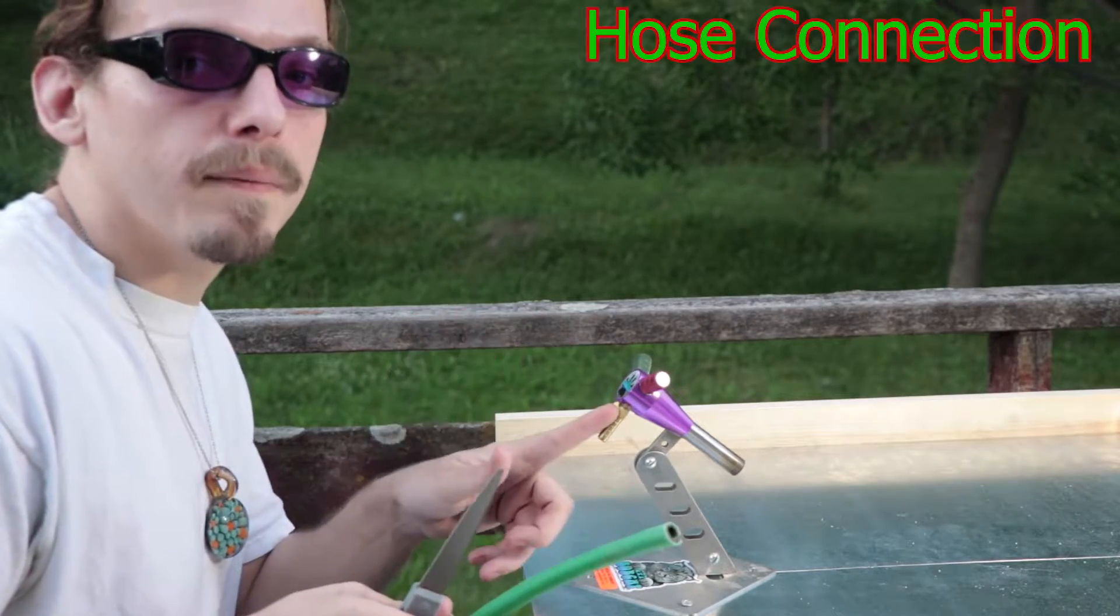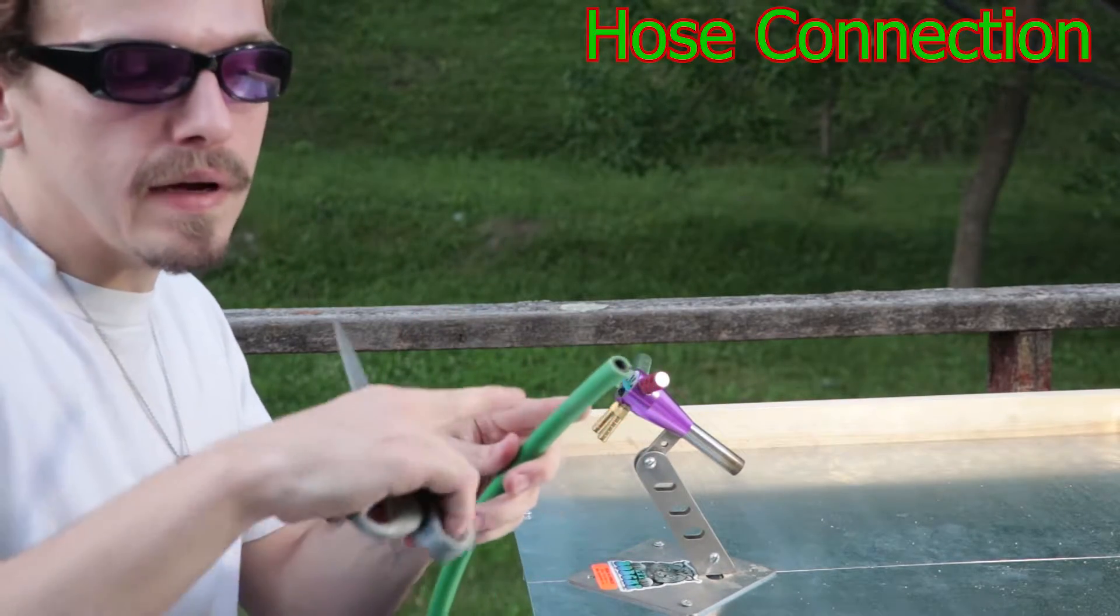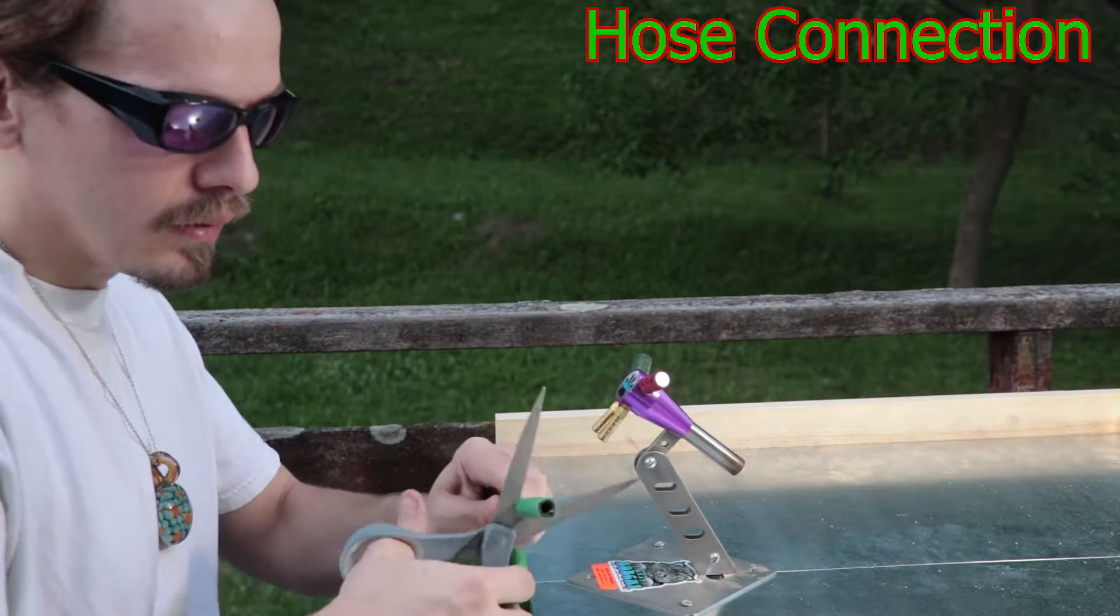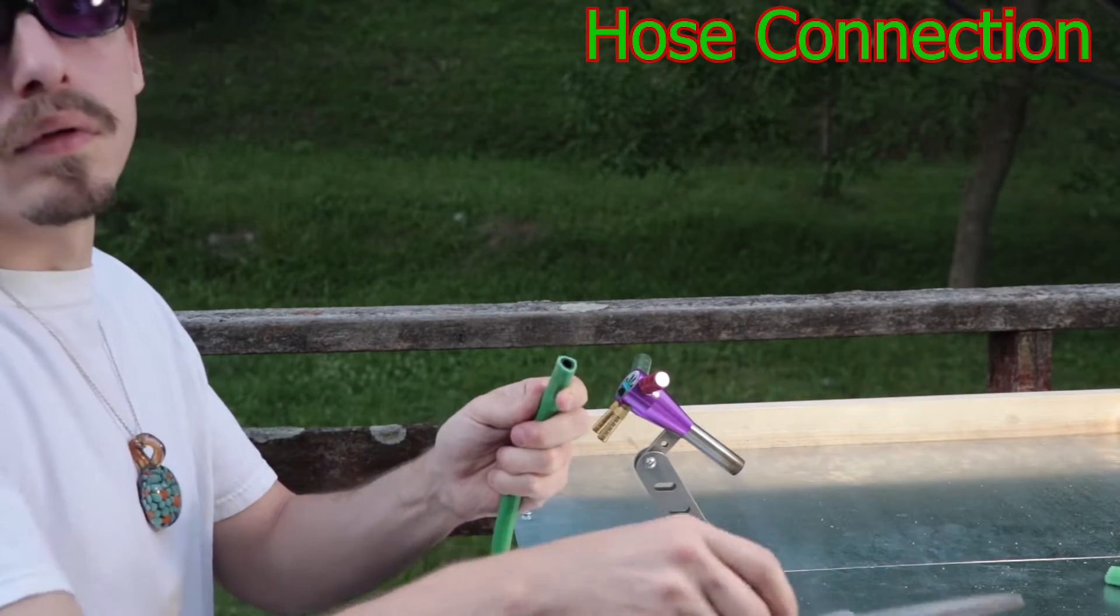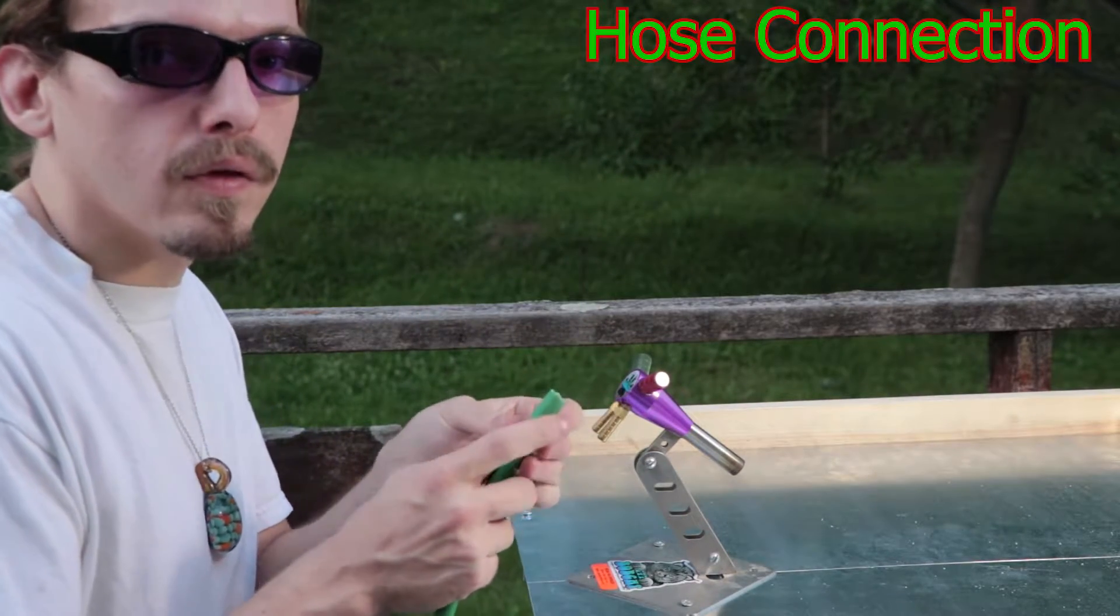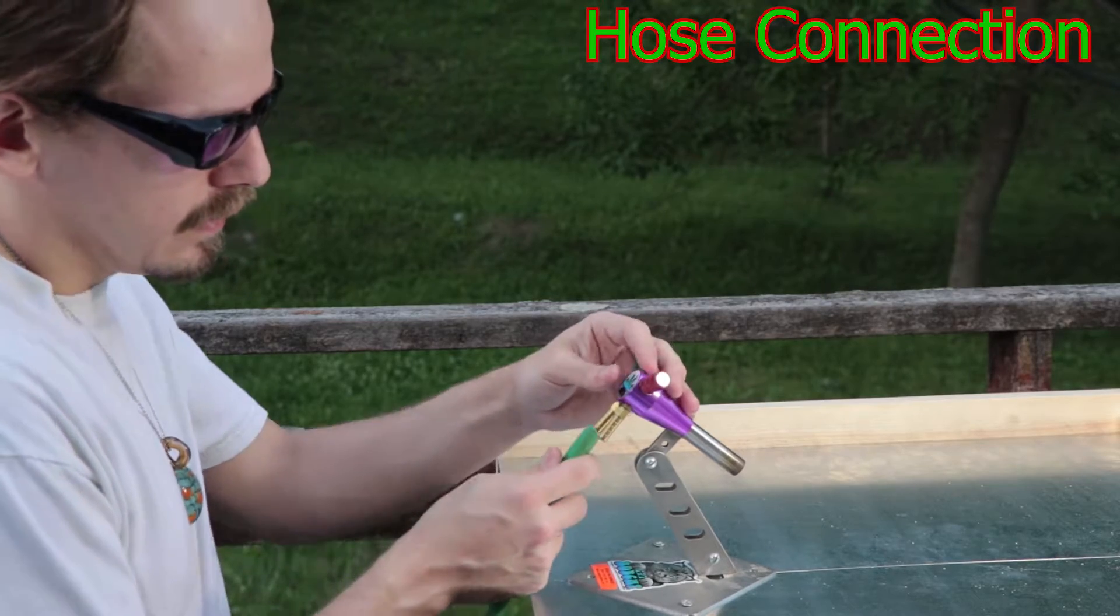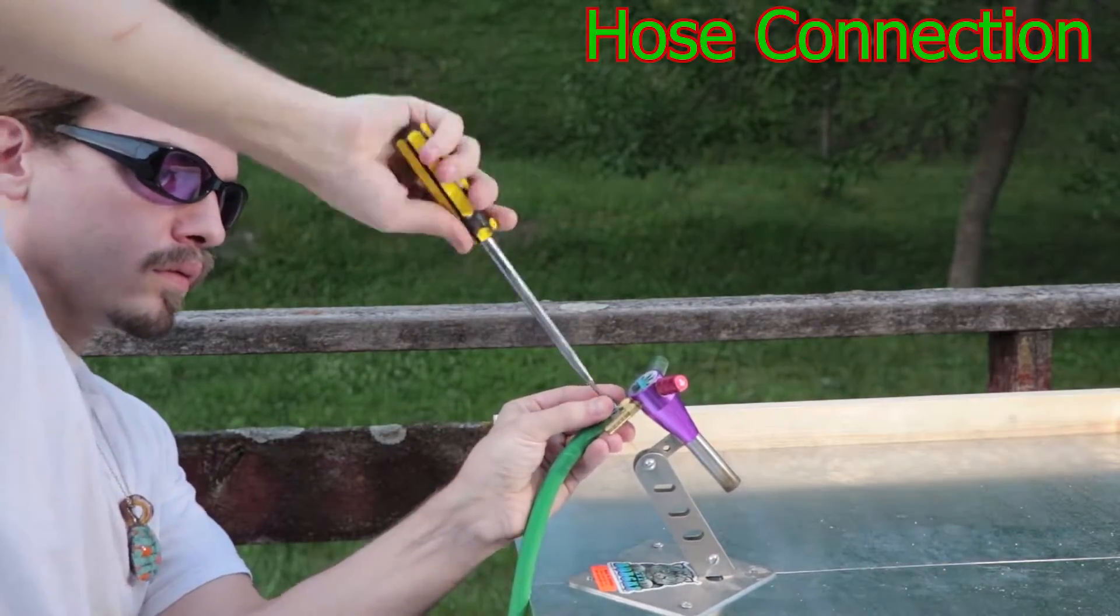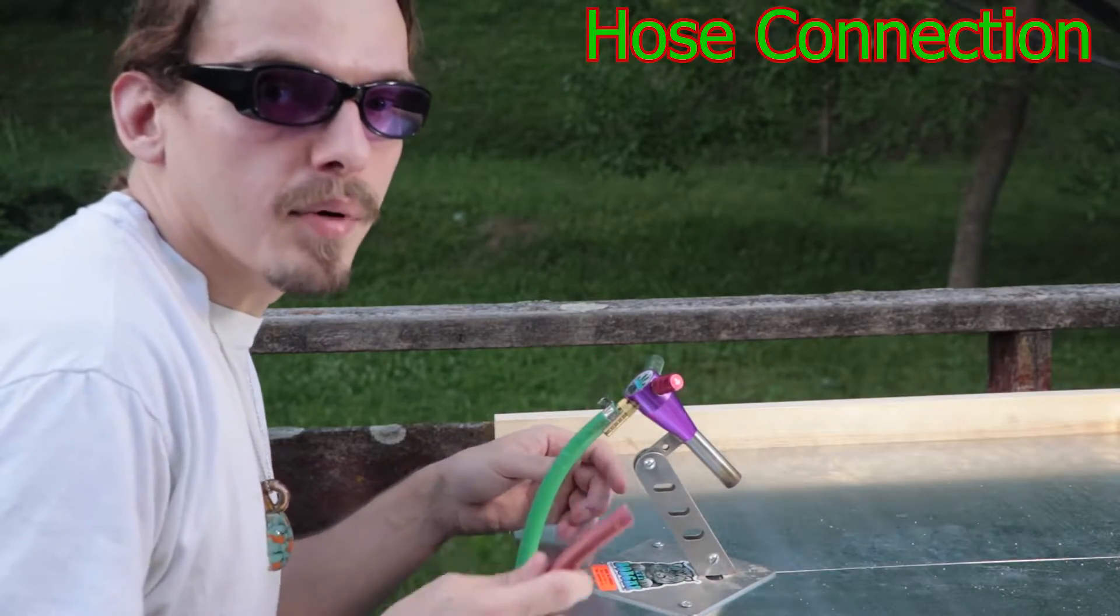Now I'm going to connect my hoses onto my barbed fittings. You want to make sure you have a nice flush cut on these hoses before you start. I'll use one of these metal clamps you tighten with the screwdriver. And now the propane line.